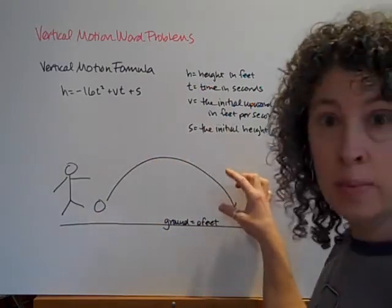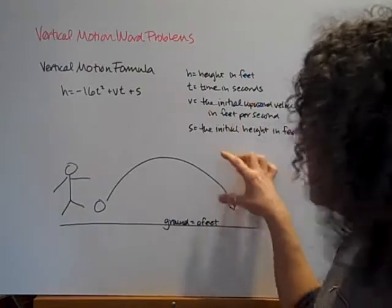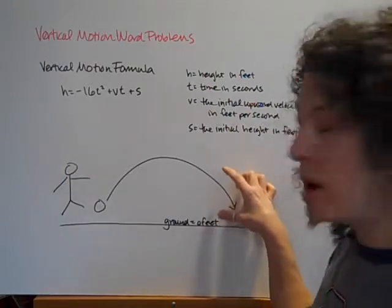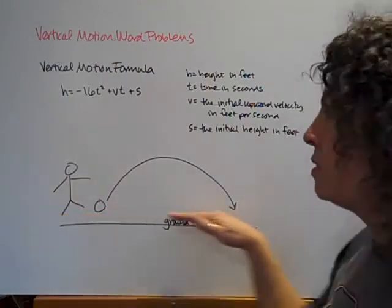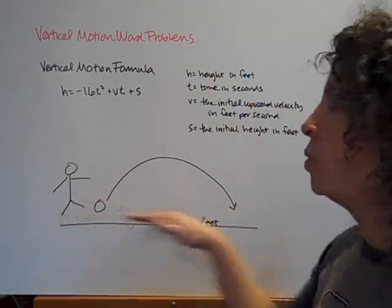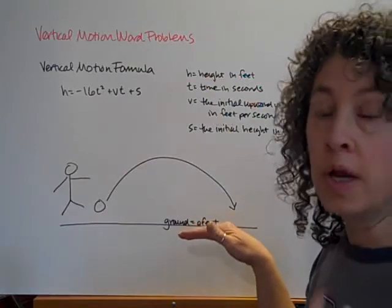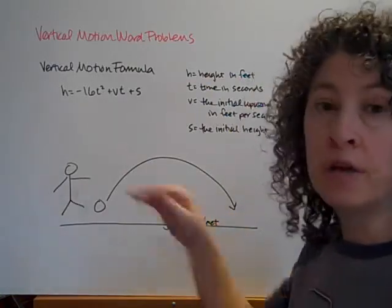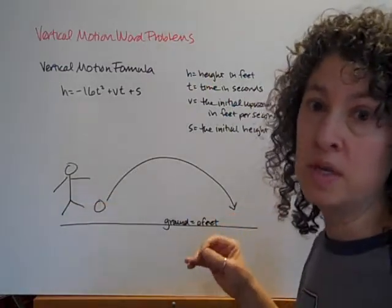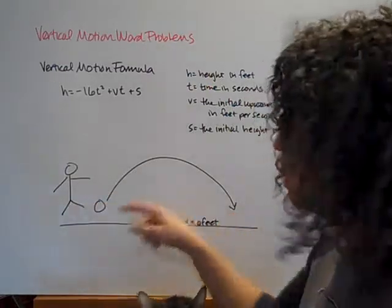So our soccer ball is starting on the ground and then it would finish up on the ground. It could have someone catch it in the middle if someone was kicking it to someone who would catch it, in which case the height we're asking about would not be zero. So we think about the zero feet as kind of where we're starting as our starting point. And in some of our situations that can be the level of the water.